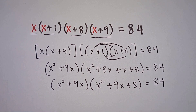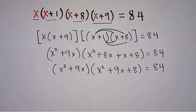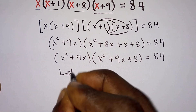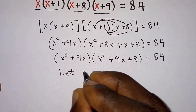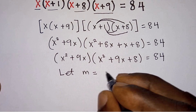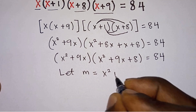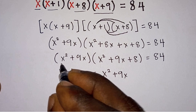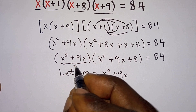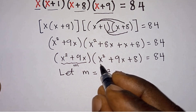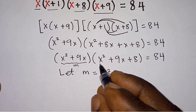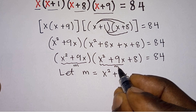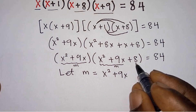To solve this equation, let's let m equal to x squared plus 9x. So the whole of this first factor becomes m. Then from here we also see x squared plus 9x, so this one also becomes m, then plus 8.